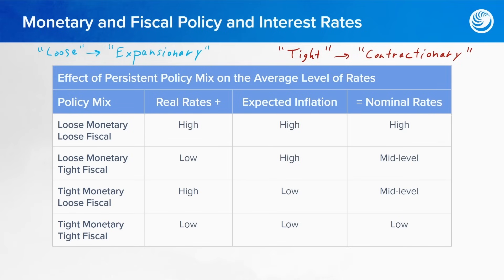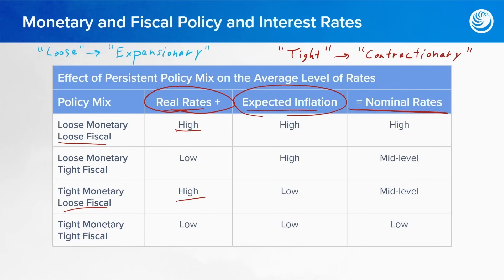Now let's look at the effects on real rates and expected inflation. Real rates plus expected inflation equals the nominal rates of return. We see that when fiscal policy is loose, real rates are high, and when fiscal policy is tight, real rates are low. So we can conclude that real rates are driven by fiscal policy.